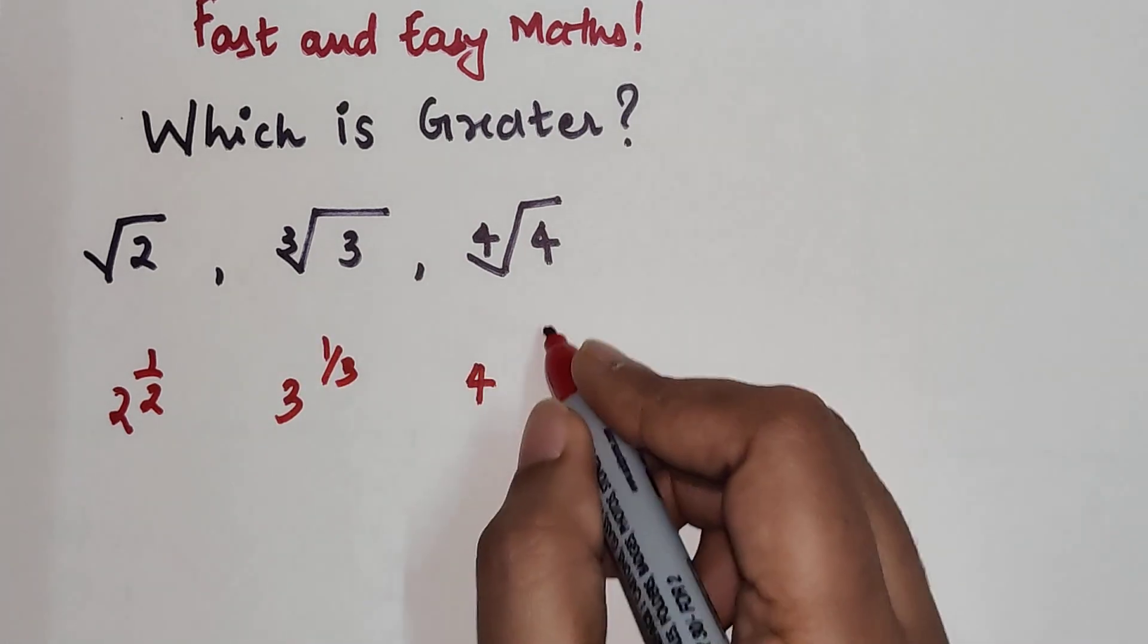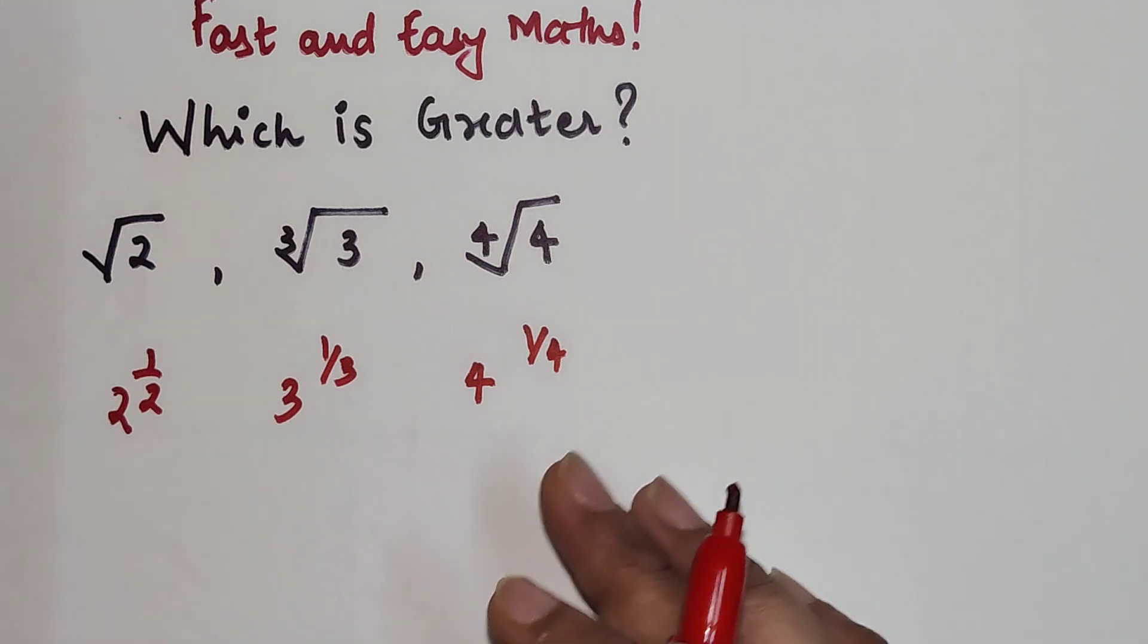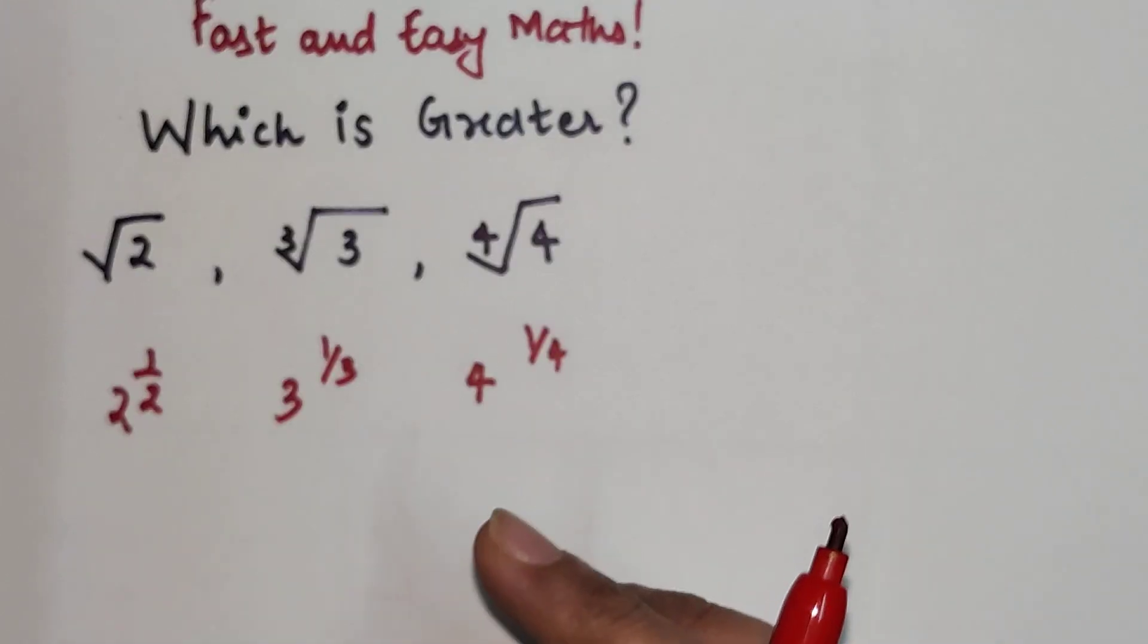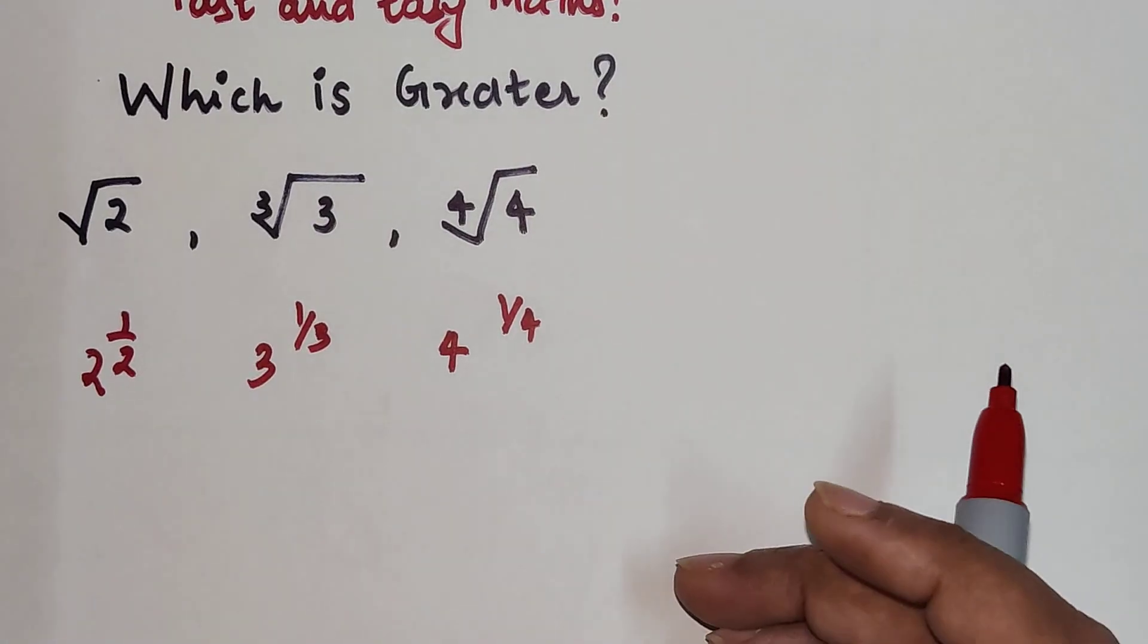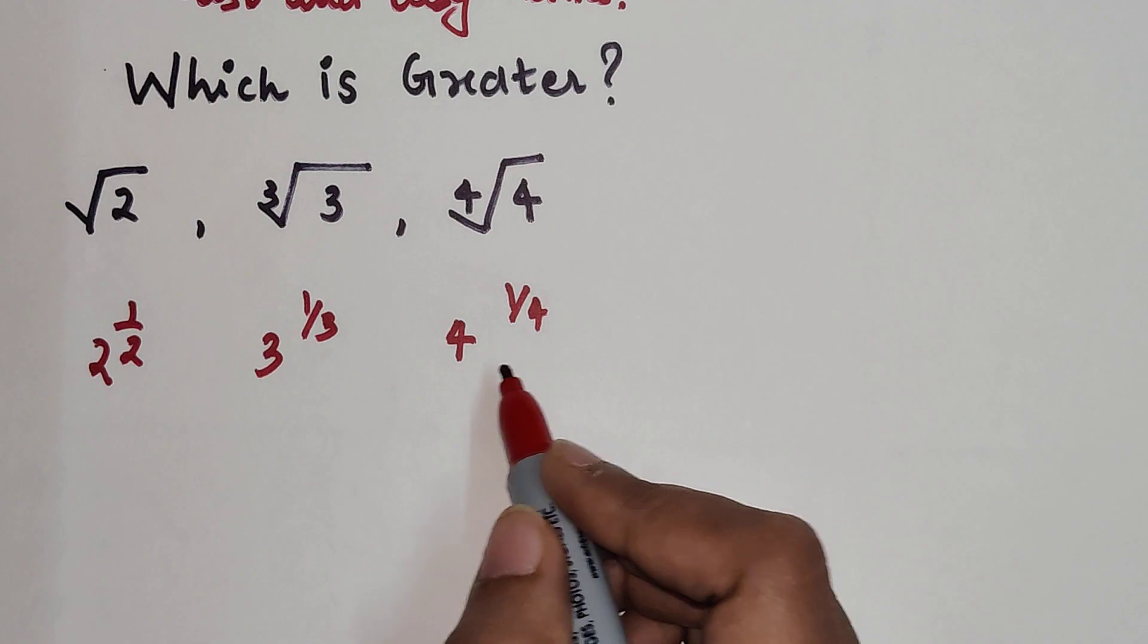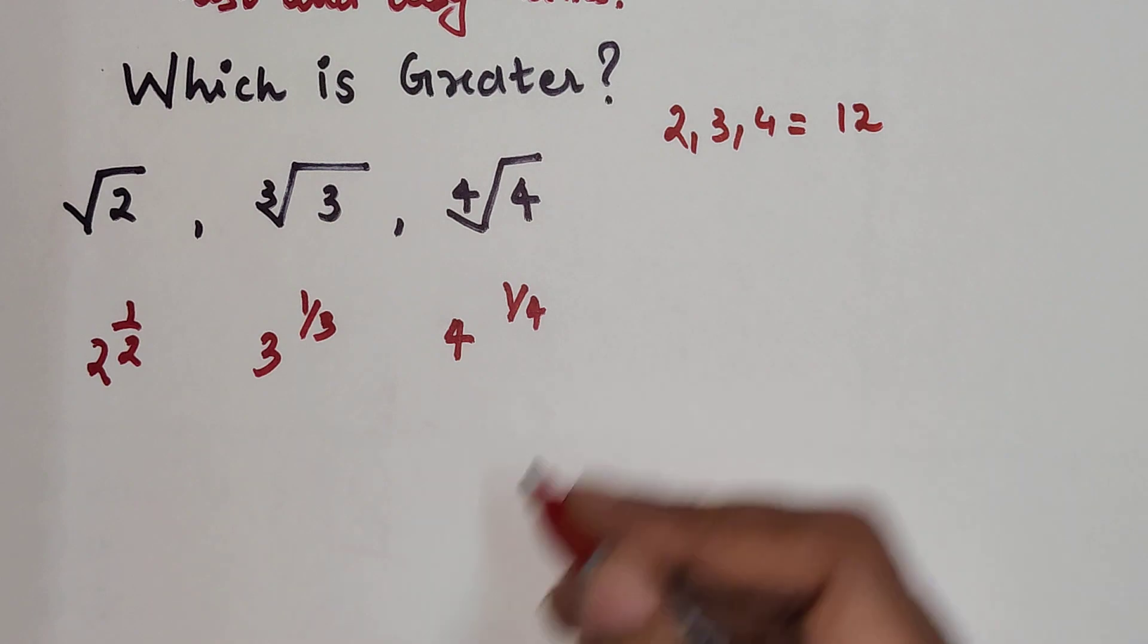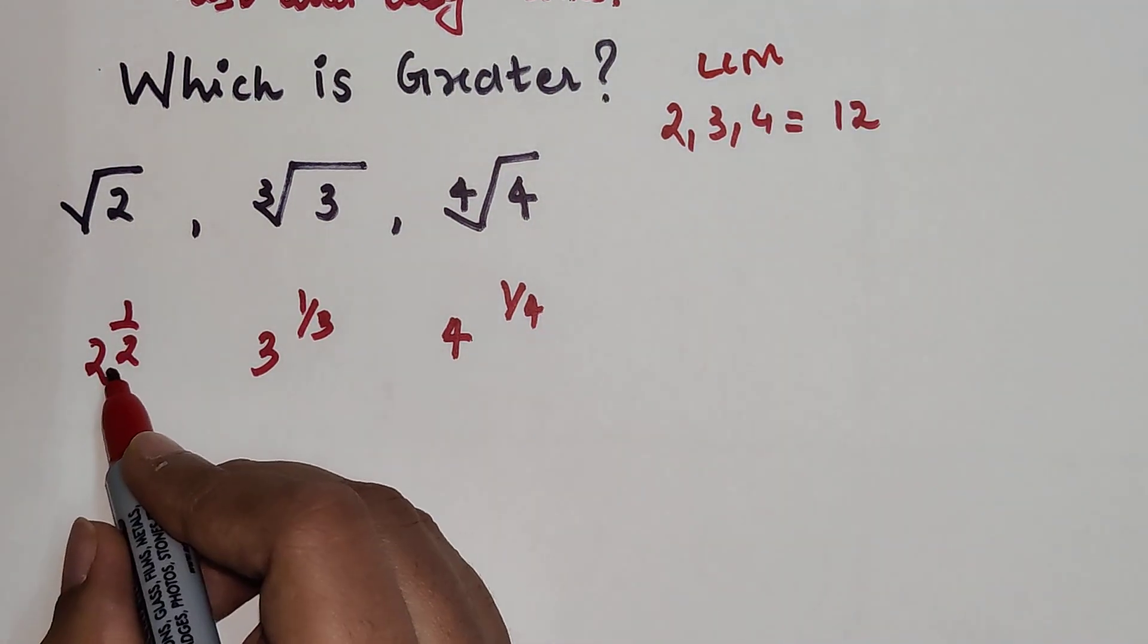Now in order to judge which entity is the greatest, we need to put all the indices in the similar form. It has to be raised to the same number. So here let's take the LCM. When you take the LCM of 2, 3, 4, it is coming out to be 12.